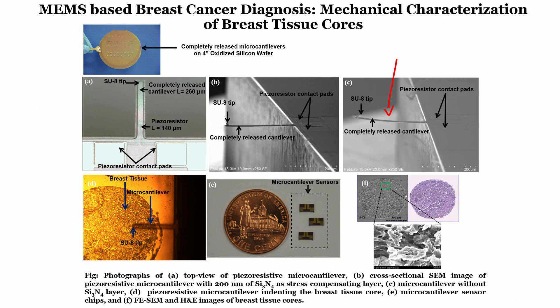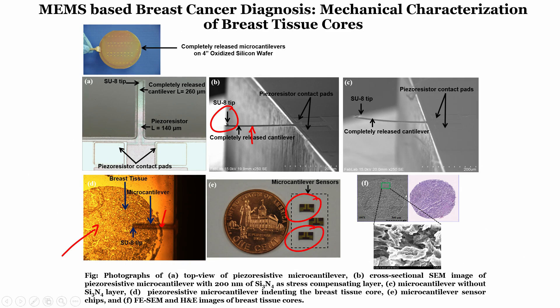When silicon nitride and silicon dioxide are both used, the stress from silicon dioxide is countered by silicon nitride. There is a SU-8 tip on the cantilever — this is the back side, so the SU-8 is touching the tissue. This is a breast tissue slice, and this is how the individual chips look.